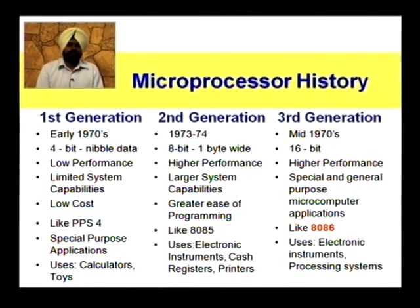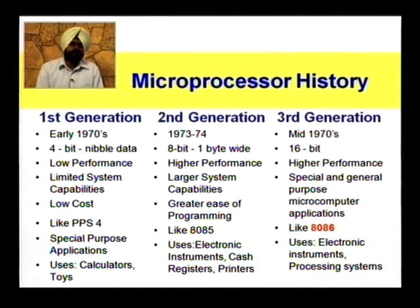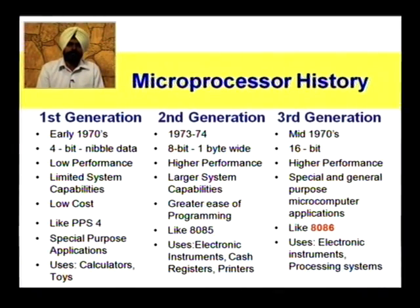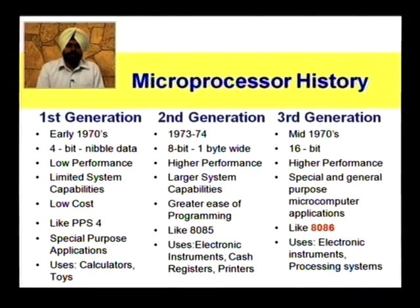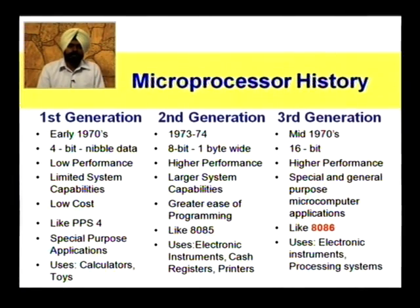As we moved from the 1970s to mid-1970s, around 1973–74, 4-bit microprocessors were replaced by 8-bit microprocessors. That means we moved from nibble-wide data to 1-byte processors. Their performance was faster compared to the first generation, and they had more capabilities compared to the 4-bit ones. The most popular microprocessor of the second generation was the 8085. They were used in electronic instruments, cache registers, printers, etc.